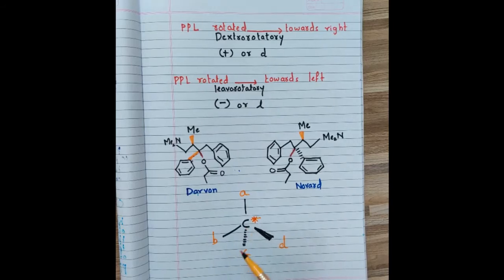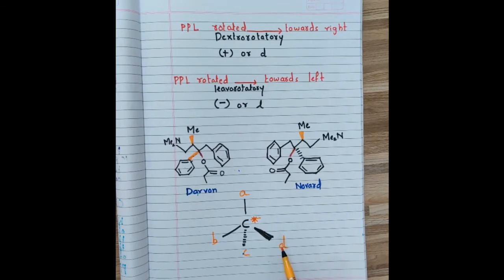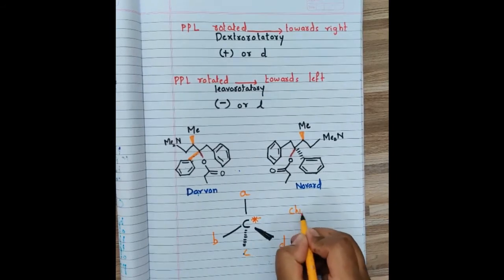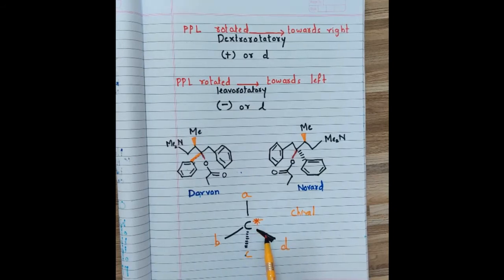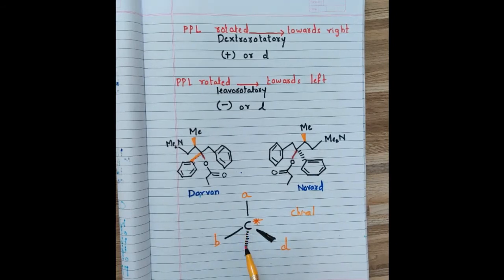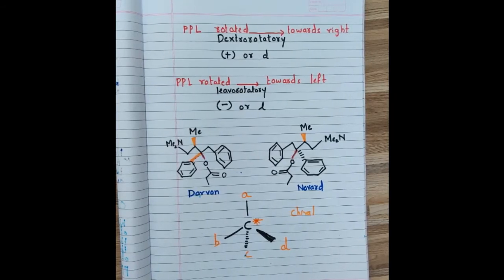If this carbon is bonded to four different atoms or groups, it is called a chiral carbon or asymmetric carbon, indicated by an asterisk mark on that carbon. They found that only molecules that contain this kind of chiral carbon can exhibit optical activity; if there is no chiral carbon, the molecule will not show optical activity.